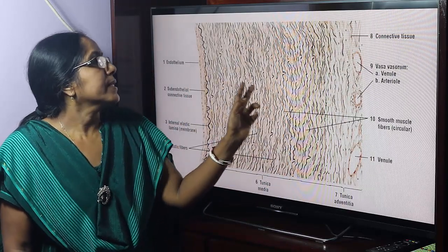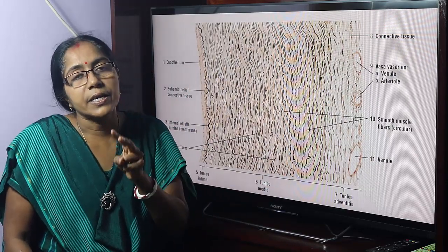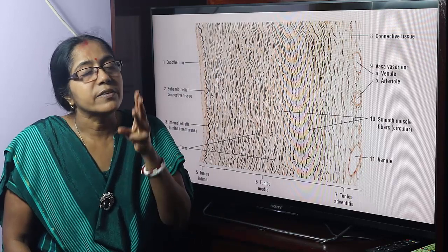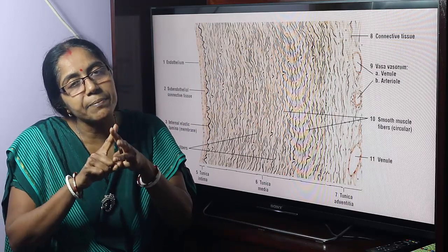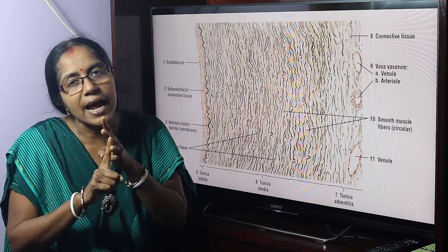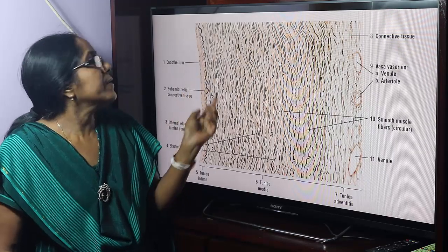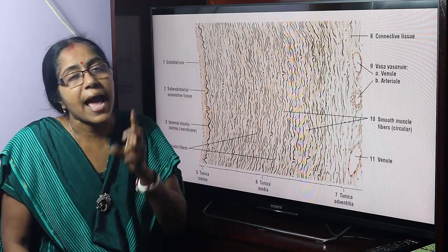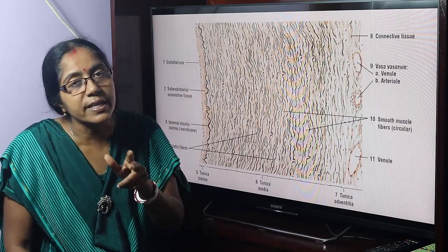The large artery consists of three layers: tunica intima, tunica media, and tunica adventitia. Now, tunica intima again consists of three layers.